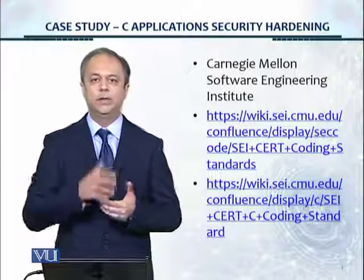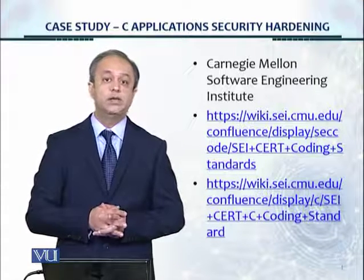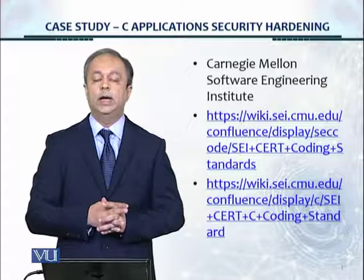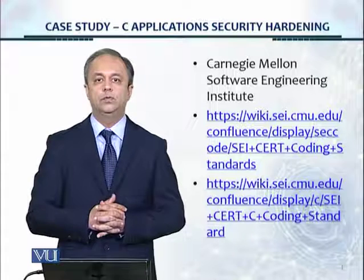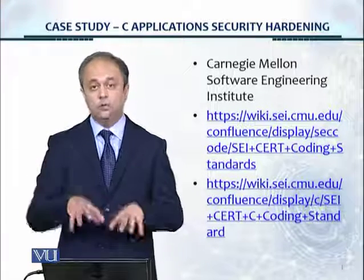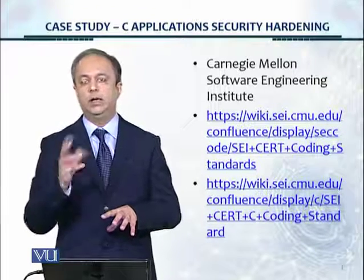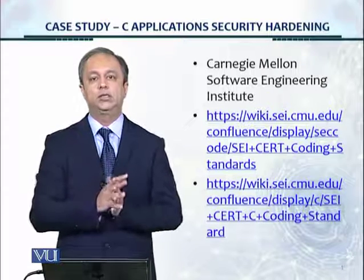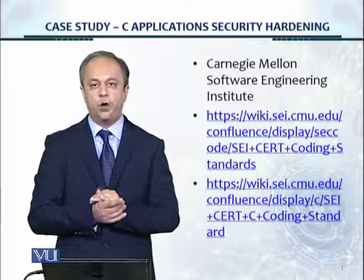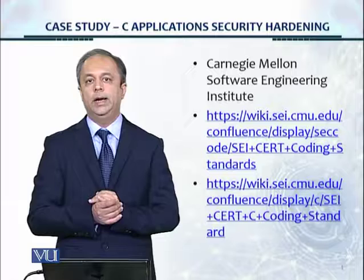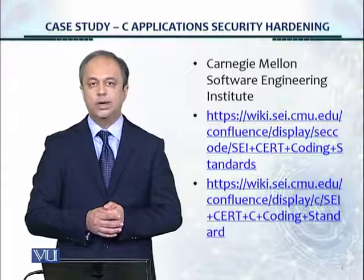Step number six is validation — someone checks that the controls have been implemented thoroughly, which involves a source code review. Step number seven is preparing the change management process, and you may also decide to do a penetration test based on the severity and criticality of the application. Once the pen test is done and all issues are fixed, step number eight is to take the hardened version of the application into the production environment. That's the entire eight-step methodology.